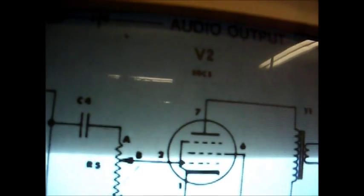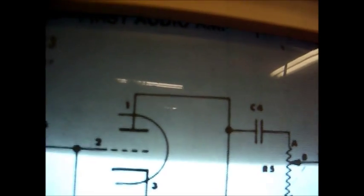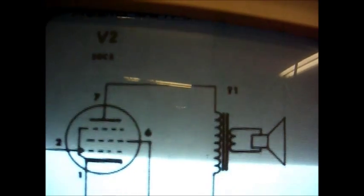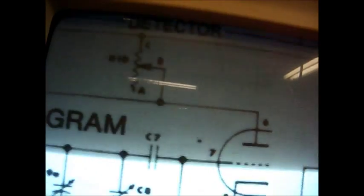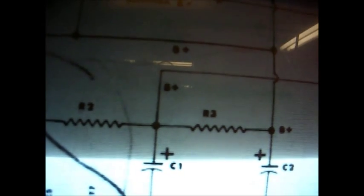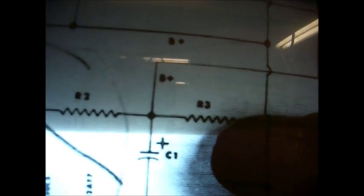Well, coming off of that source, it goes up to the screen grid of the 50C5 audio output tube. And it comes around here through a resistor up to the plate of the 12AT7, first audio stage. And I discovered what someone did. They got these resistors mixed up. This is supposed to be a 4.7K ohm. They put a 47,000 in there.